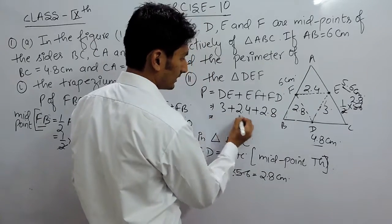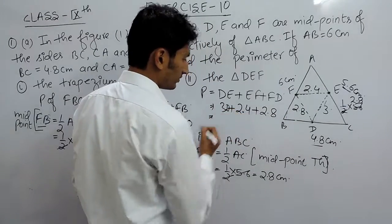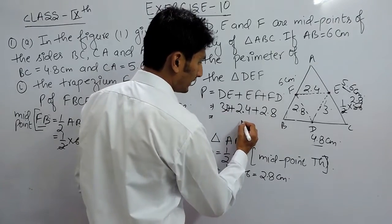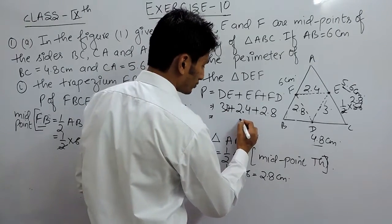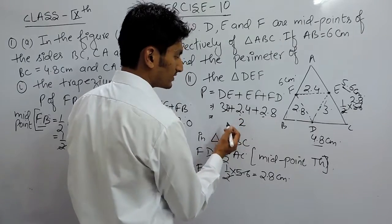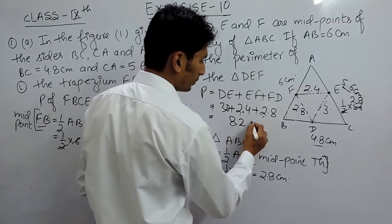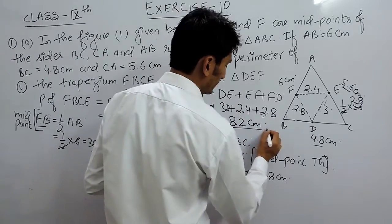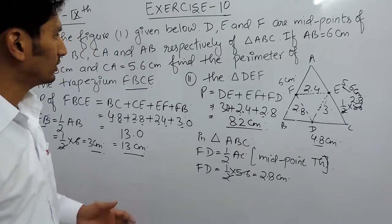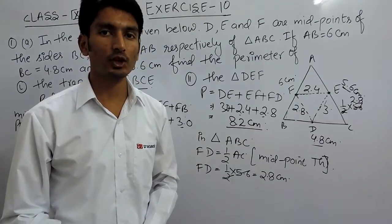Adding the sides: 3.0 + 2.4 + 2.8 = 8.2 cm. So the perimeter of triangle DEF is 8.2 cm. This is the answer for the second part of the first question. Thank you.